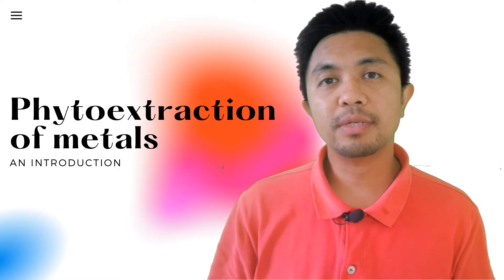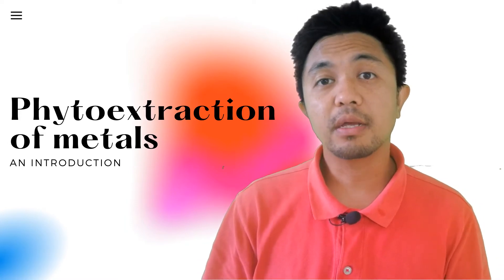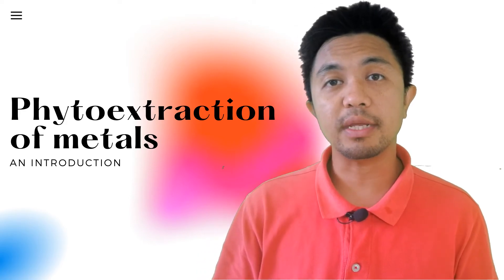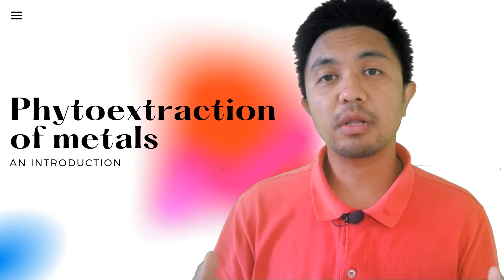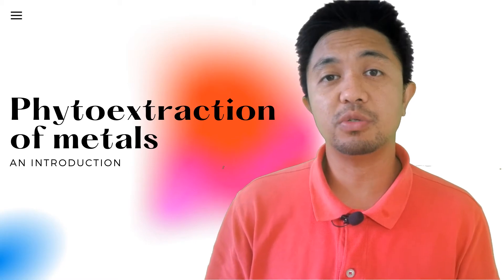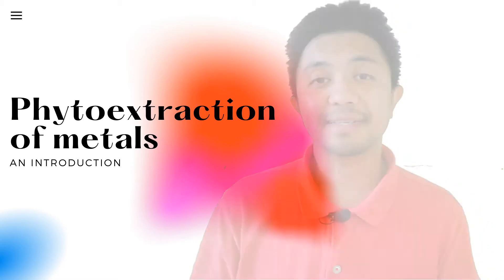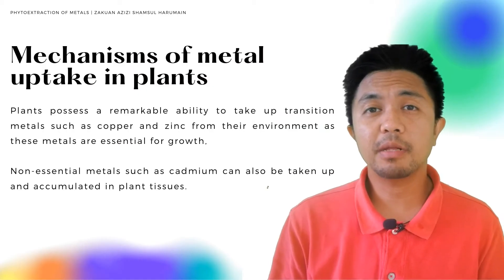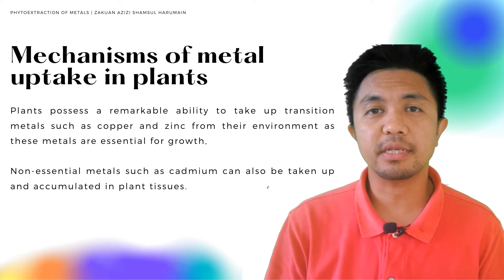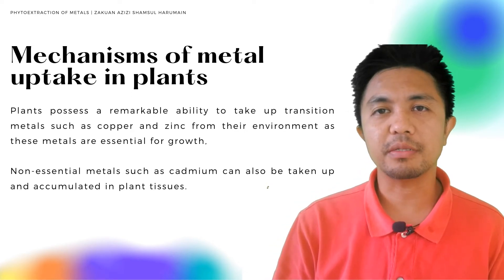Did you know that plants have the ability not just to absorb metals from the ground, but they are also able to accumulate and tolerate high levels of metals in their tissues? Amazing, isn't it? Plants possess a remarkable ability to take up metals such as copper, zinc and iron from their environment.